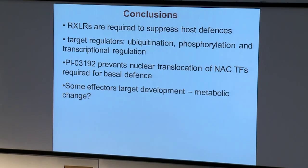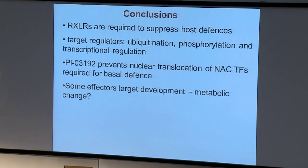In conclusion, I hope I've convinced you that these RxLR effectors are involved in suppressing host defenses. They target various proteins in the plants — what I've talked about are some of the regulators such as those involved in ubiquitination, phosphorylation or dephosphorylation as in the case of BSL1, and transcriptional regulators such as the NTPs. 03192 is able to prevent the nuclear translocation of NACs NTP1 and NTP2 following PAMP perception. Some effectors from the yeast two-hybrid are potentially involved in metabolic change in the plant — obviously the pathogen's primary purpose is to get food from the plant, so there may be a role for effectors in manipulating metabolism — that's something for the future.